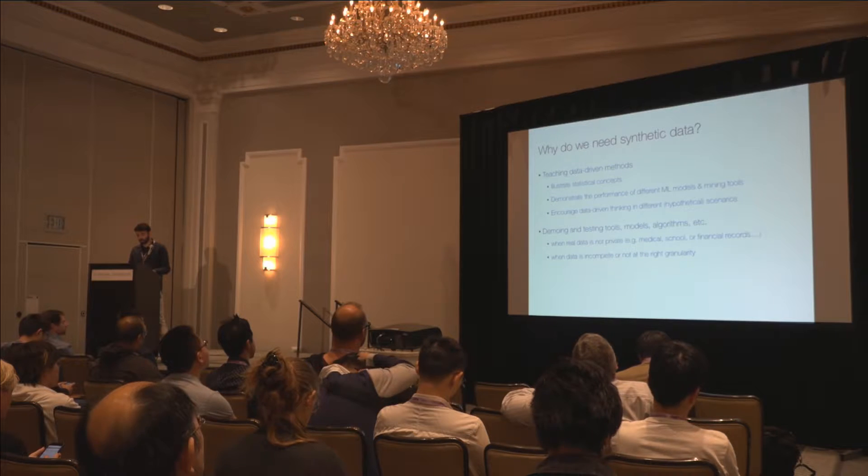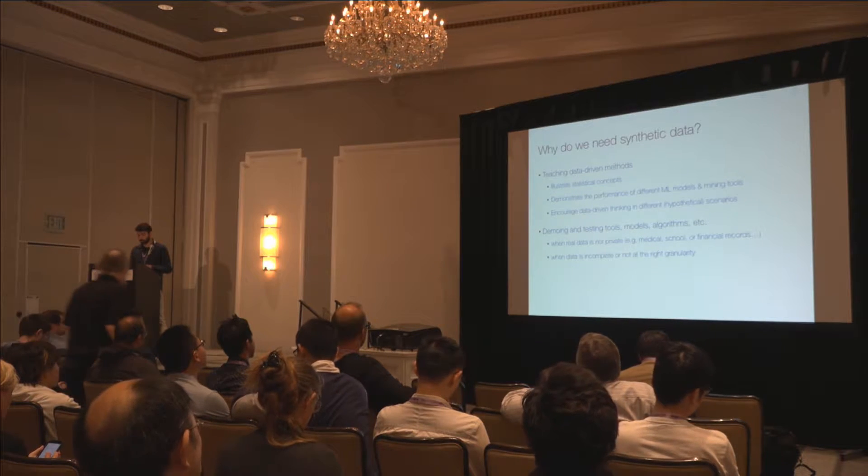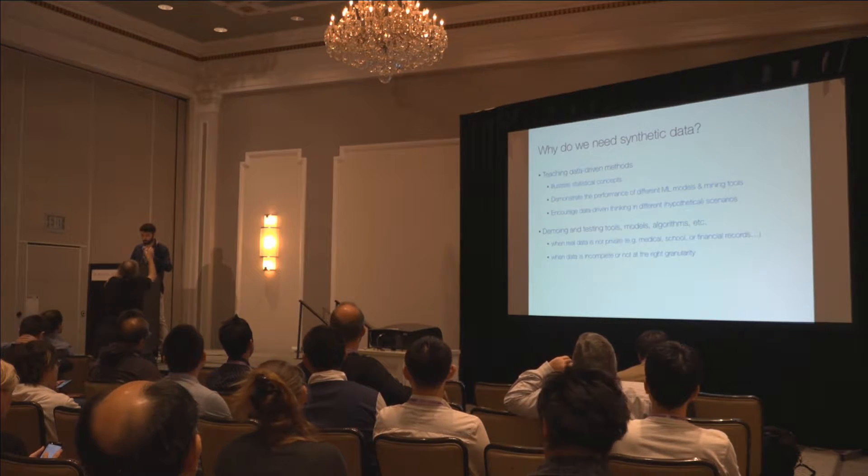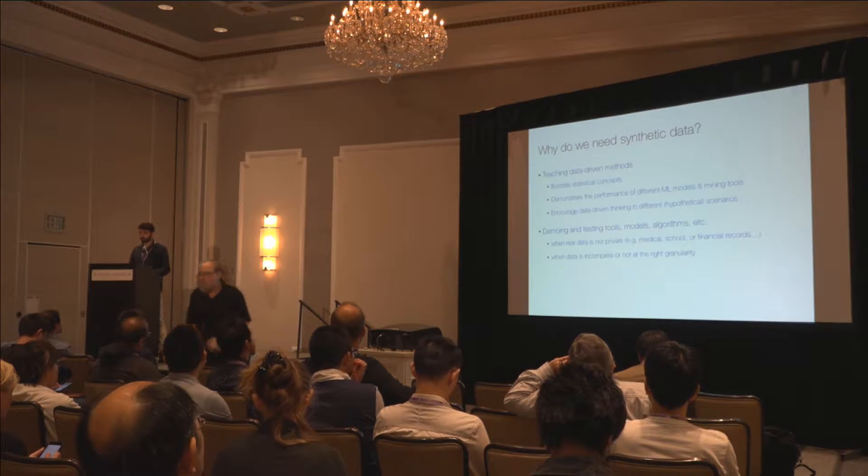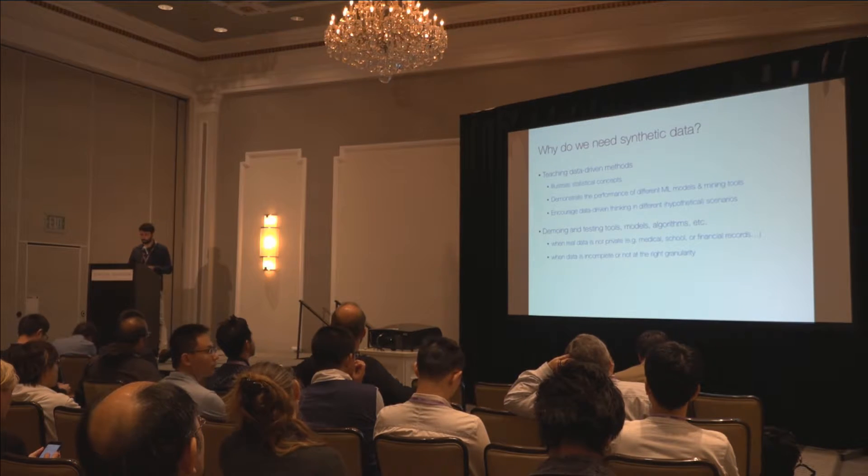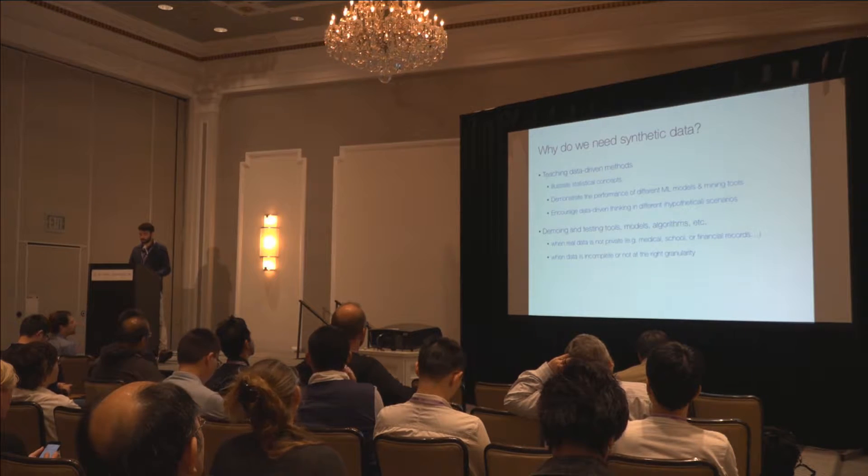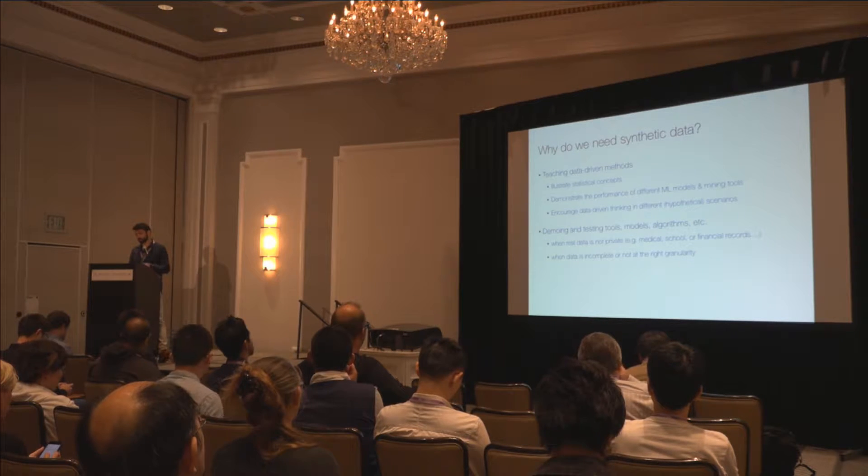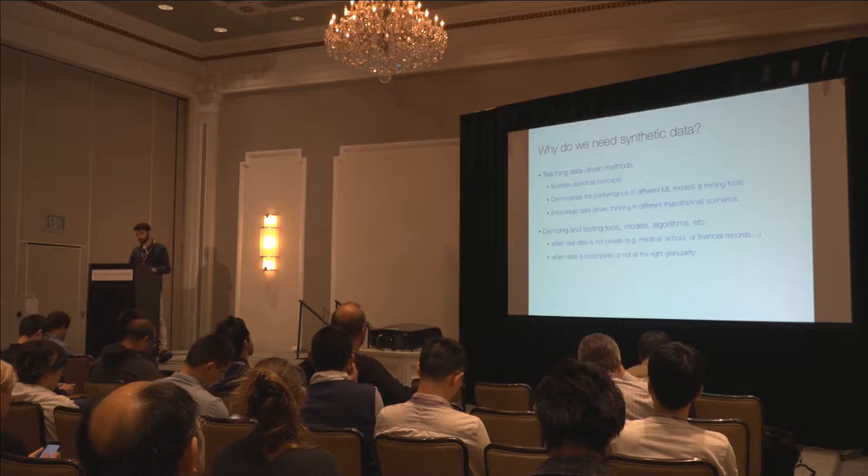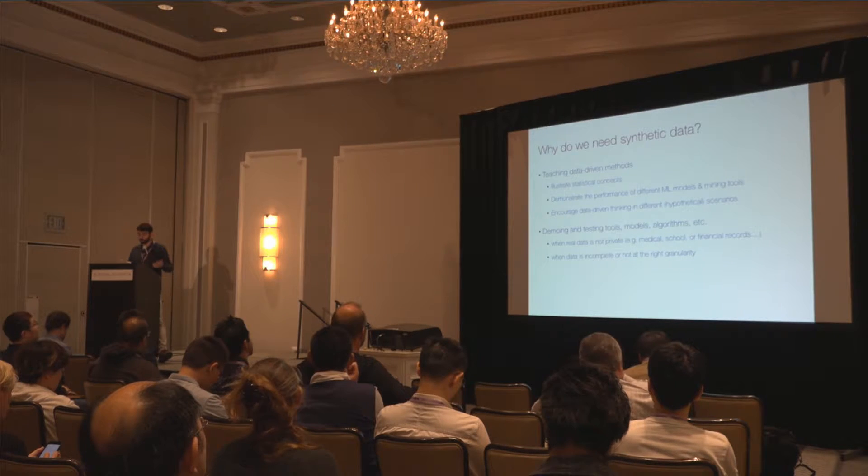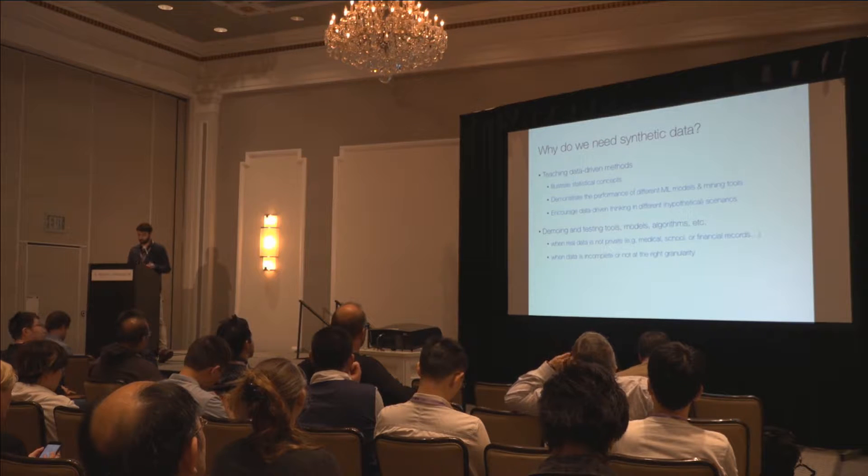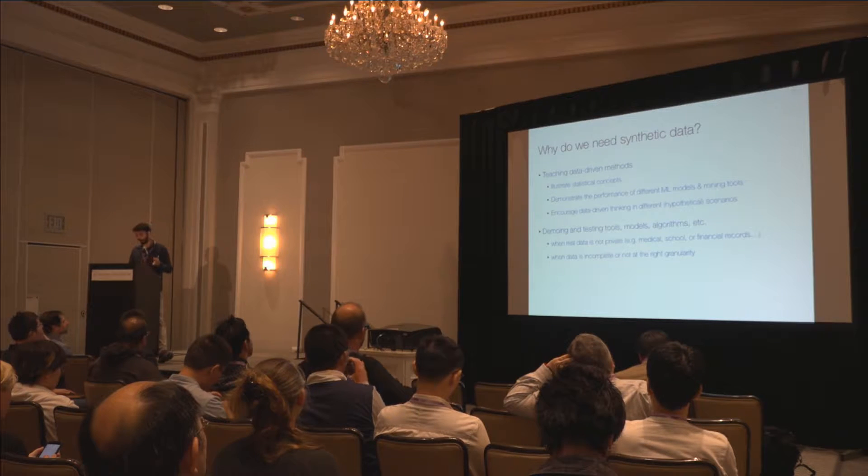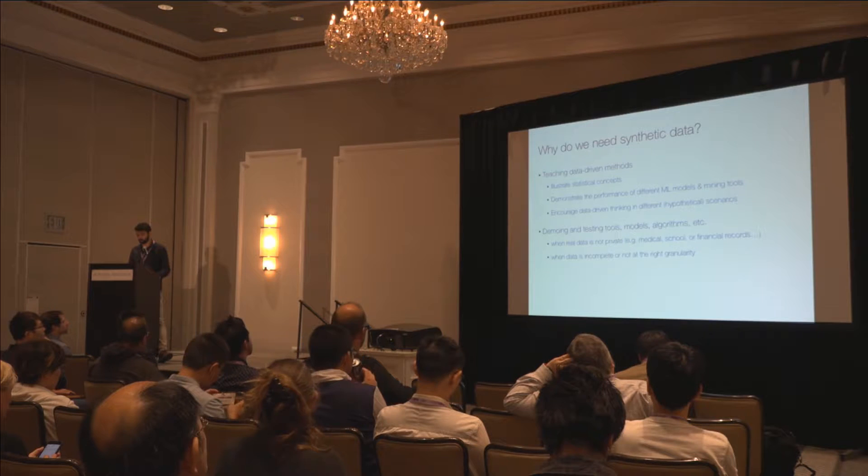So the second case is when real data sets are not in the right granularity. For example, publicly available data through initiatives such as opendata.gov are often aggregated. And the third case is when real data sets are not in the right scale. Data owners often provide restricted access to a small subset of a larger and richer first party data. And the fourth case is when real data sets are incomplete. A poor data sample might be missing key illustrative trends or key field entirely.